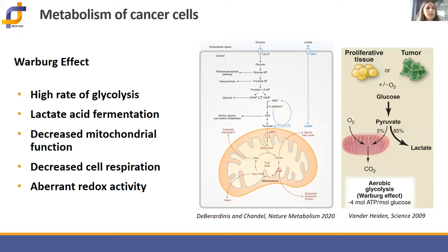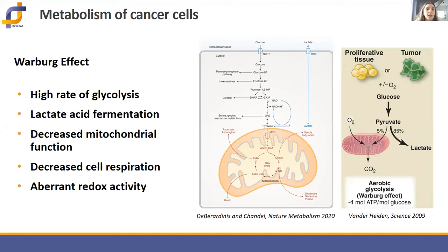I will start with a few basic pieces of information about cancer cell metabolism. The metabolism of most cancer cells cultured in vitro relies basically on anaerobic glycolysis. This was first observed and discovered by Otto Warburg. Even in the presence of oxygen, mitochondrial respiration is suppressed, and this is the probable mechanism by which cancer cells can escape apoptosis and promote a high proliferation rate.